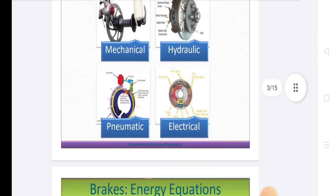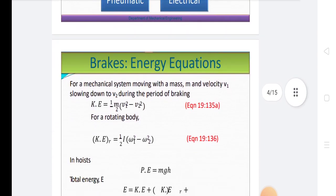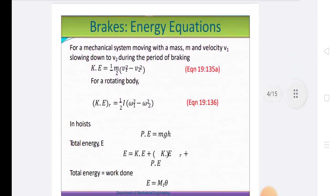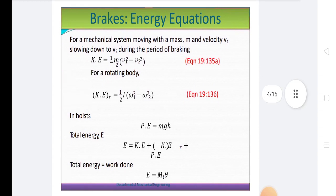After then there is brake energy equations. For a mechanical system moving with a mass m and velocity v1 slowing down to v2 during the period of braking, kinetic energy is equal to 1/2 m into v1 squared minus v2 squared. For rotating body kinetic energy is equal to 1/2 I into omega 1 squared minus omega 2 squared.